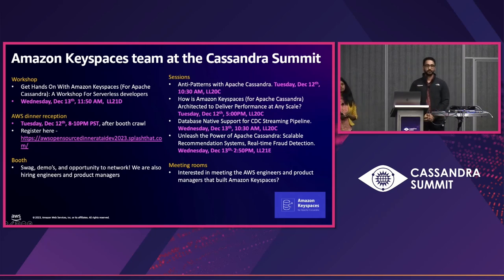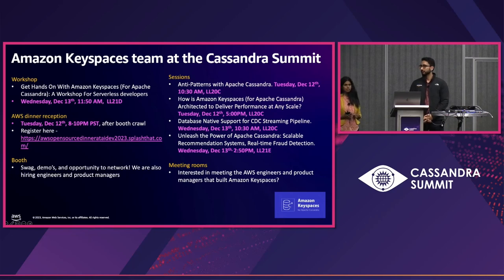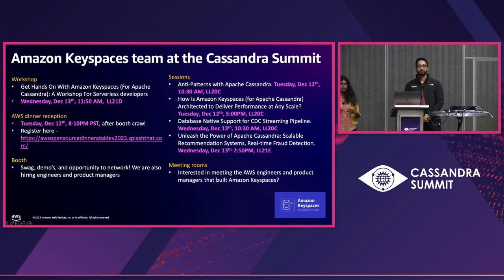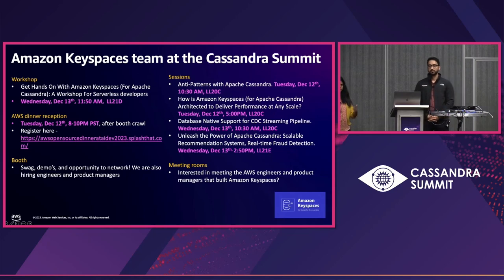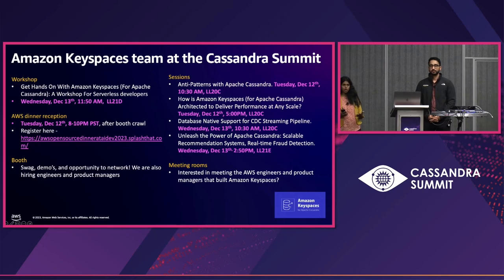On Cassandra 5 support: Cassandra version deprecations don't work the same way in Amazon Keyspaces as in open-source Cassandra. That said, we do have a feature roadmap to support more features you'd see in Cassandra 5. If there's a specific feature you're interested in, visit us at the booth — our product team can help you understand where it aligns in our roadmap.